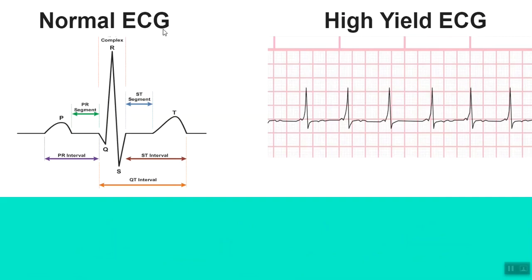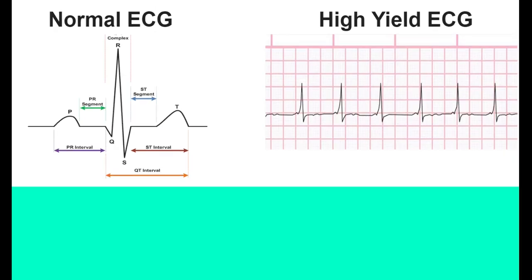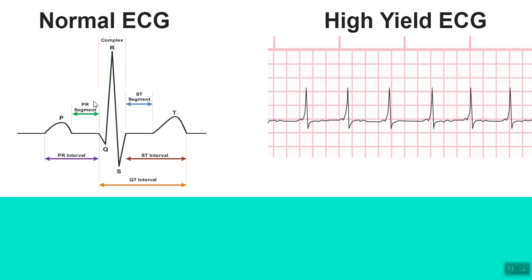This is a normal ECG. The P wave represents atrial contraction. The peak here is the QRS complex, which represents ventricular contraction. Lastly, this is the T wave that represents ventricular repolarization. The space between the P wave and the peak of the QRS complex is called the PR interval, and the space between two consecutive QRS complexes is called the RR interval.